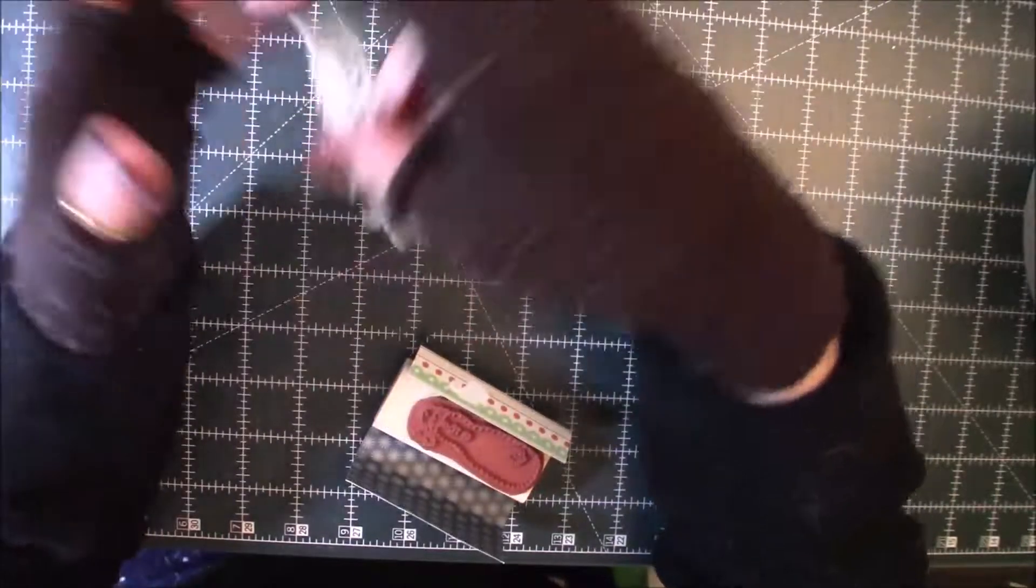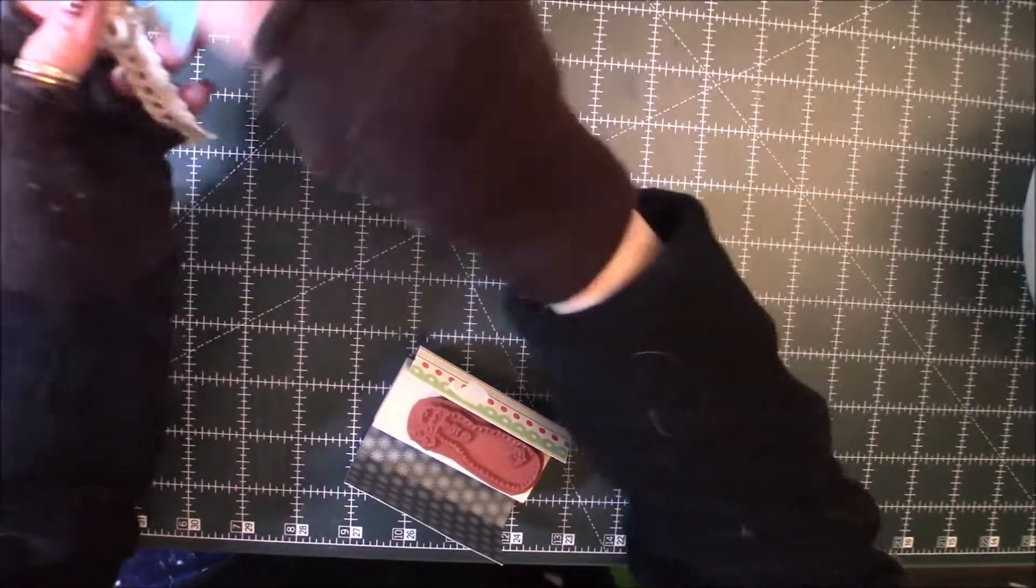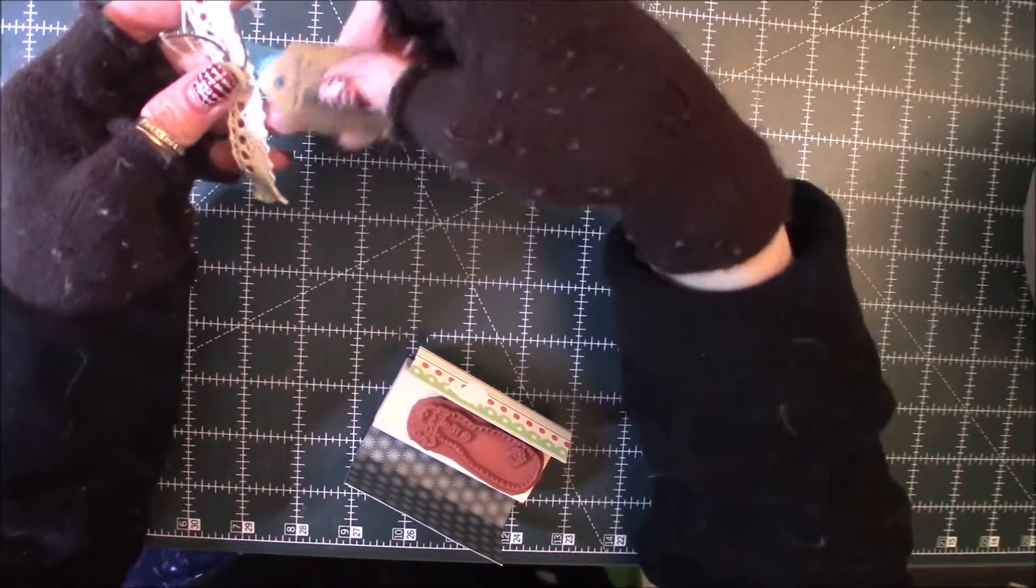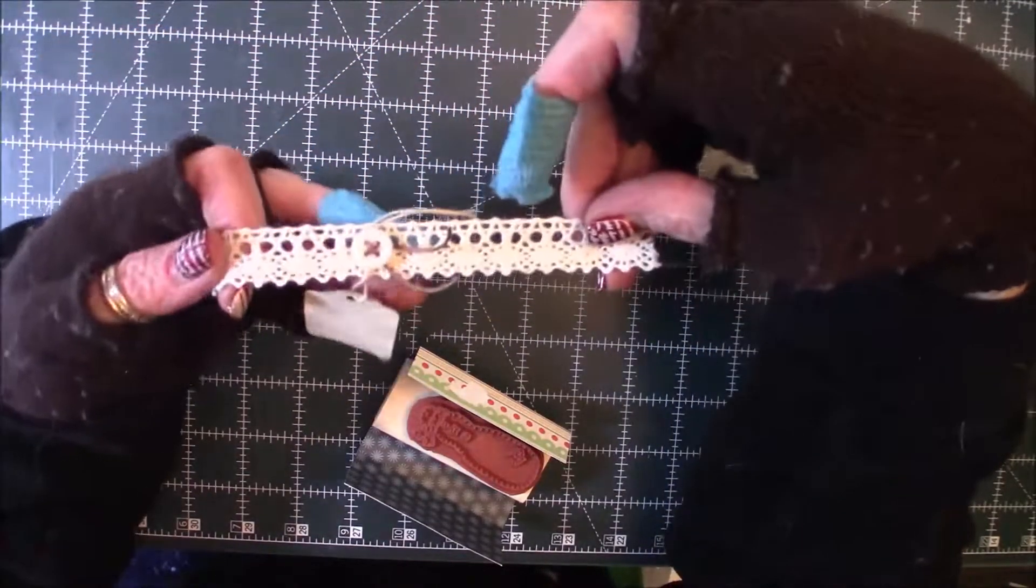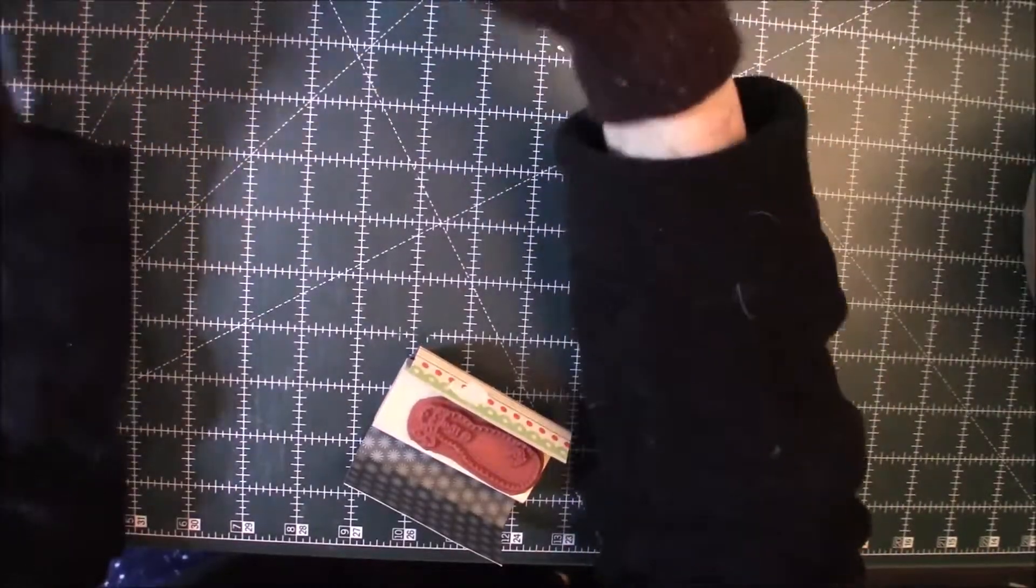It had this little trim with this button on it and this little tag, this is to Pea from Anna. So I'm gonna take the tag off and I'm gonna leave this and I'm gonna use this on a project. I haven't decided to play yet but I am gonna use this because it's just too sweet not to.